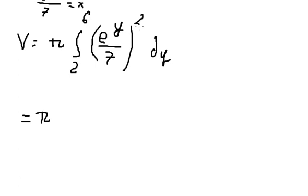So 7 to the power of 2, we have 1 over 49. And we have e to the power of 2y dy.